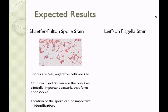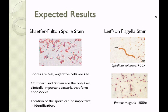The Leifson flagella stain shows two organisms. First, Spirillum volutans — describe its flagellar arrangement. Note that you observe it at 400x; it is a very large organism commonly found in sewage, so oil immersion is not needed. The second organism is Proteus vulgaris, observed with oil immersion. What is the flagellar arrangement of this organism? See you in lab!